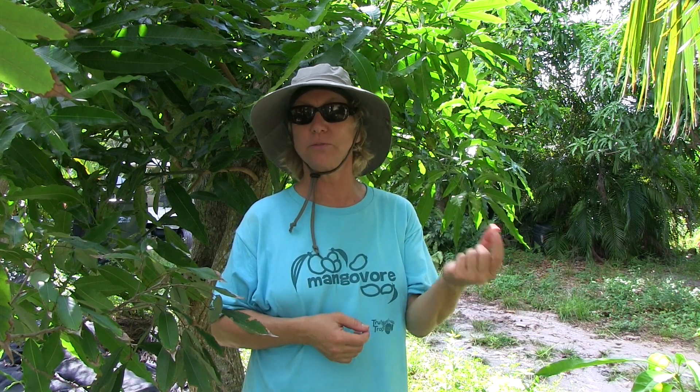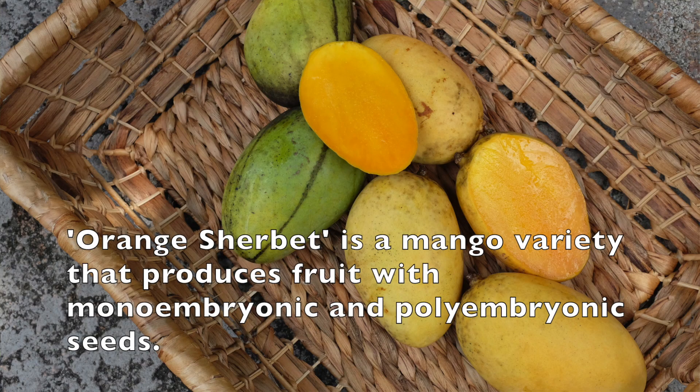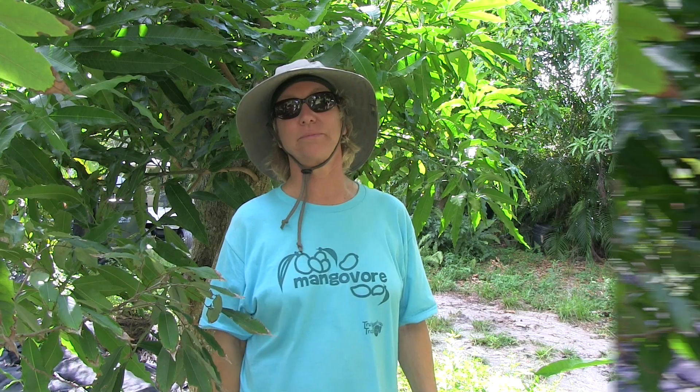An interesting thing that happens with some of our varieties is that the fruit on one variety of tree will be identical, but the seeds will not be. Sometimes the seeds in some fruit will be monoembryonic, and in other fruit of the same variety will be polyembryonic.